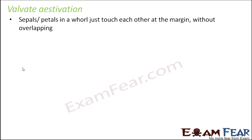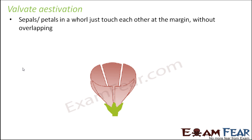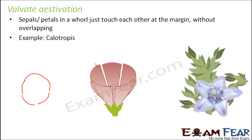In valvate estivation, the sepals or petals in a whorl just touch each other at the margin without overlapping. So whether you talk about the sepals or the petals, they are arranged so that each one just touches the next one without overlapping. This kind of arrangement is called valvate estivation. Each of these represents a petal or a sepal — the petals are arranged this way and the sepals are also arranged this way. The example is calotropis, where you can see how the petals are arranged and that they do not overlap with each other.